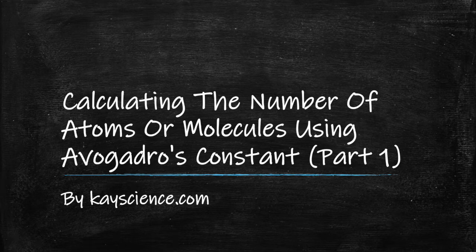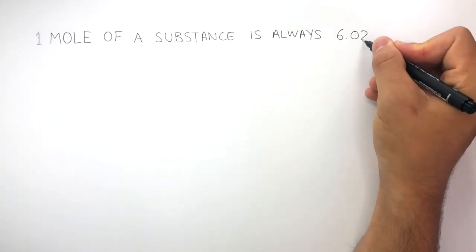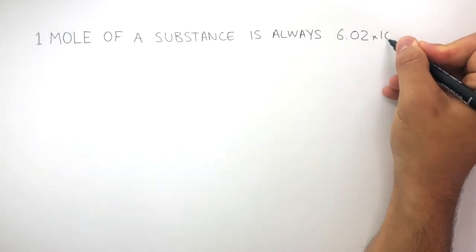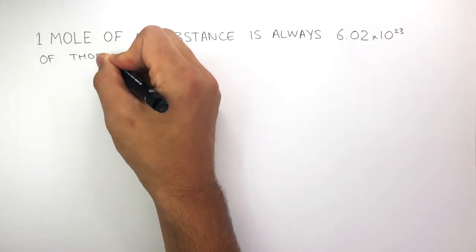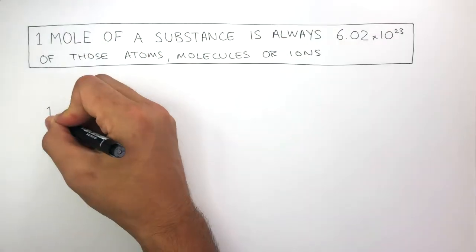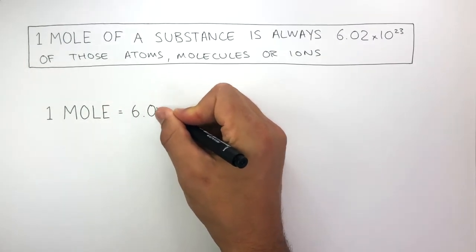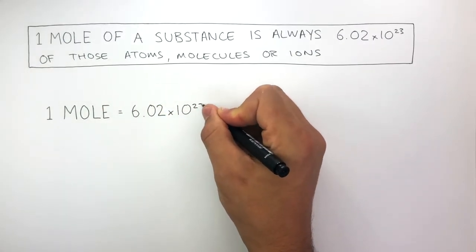Calculating the Number of Atoms or Molecules Using Avogadro's Constants. We've learnt from a previous video that one mole of a substance is always 6.02 times 10 to the power of 23 of those atoms, molecules, or ions. So one mole always equals 6.02 times 10 to the power of 23.